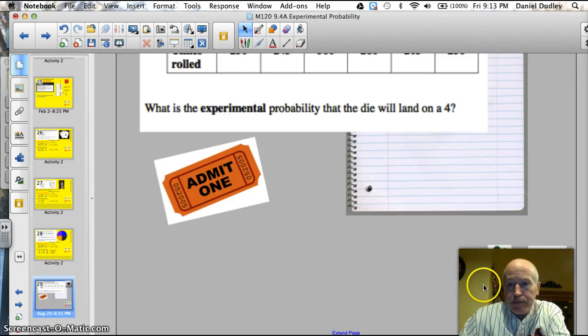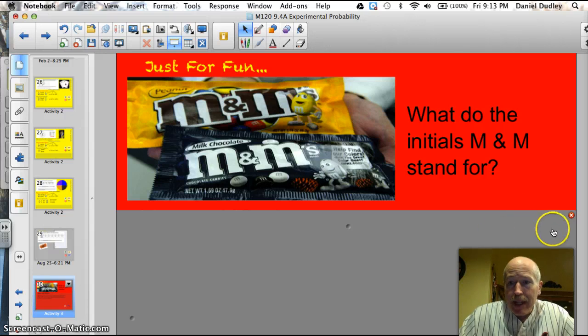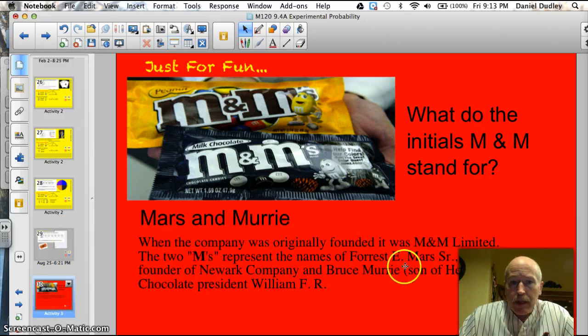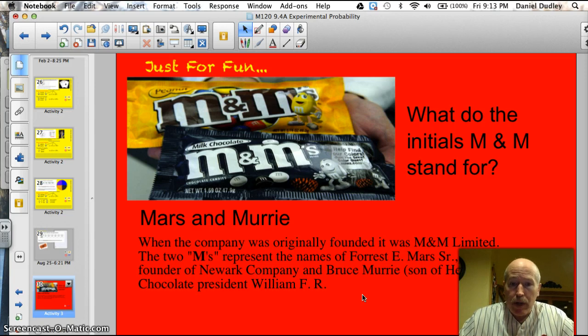All right. Our trivia question of the day. What do the initials M and M stand for? Mars and Murray. When the company was originally founded, it was M&M Limited. The two M's represented the names of Forrest E. Mars, Sr., the founder of the New York company, and Bruce Murray, son of Hershey's Chocolate president, William F. R. Hope you enjoyed that trivia question. I'm all great. All right. Have a good evening. Bye.